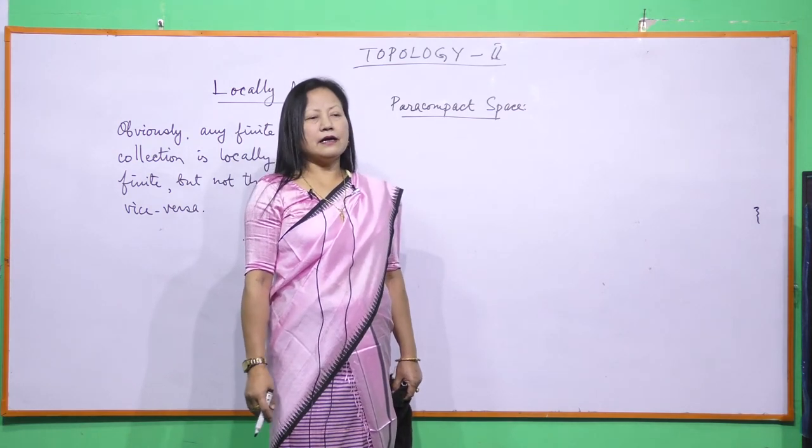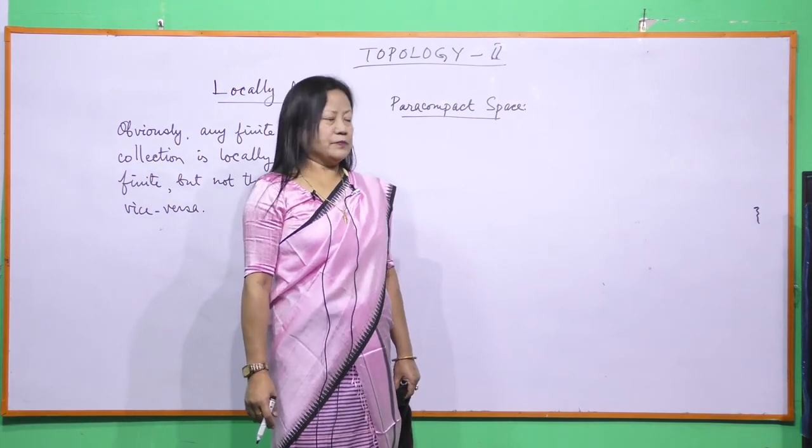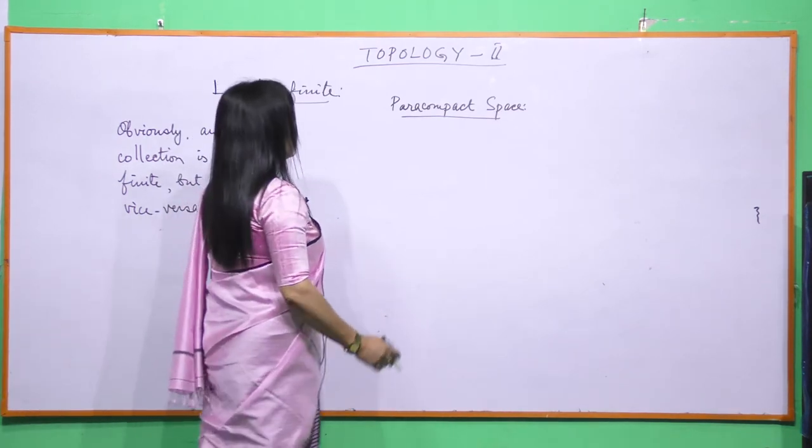We may recall the compact space as a topological space X is said to be compact if every open cover of X has a finite sub cover. Okay, here coming back to this, coming back to the present,